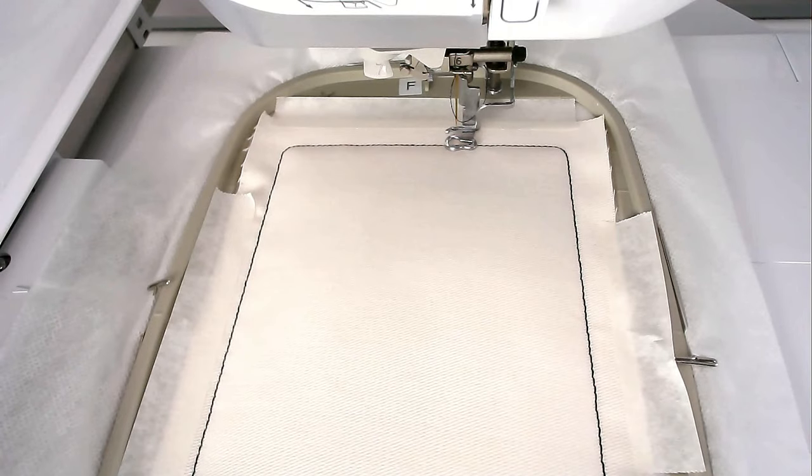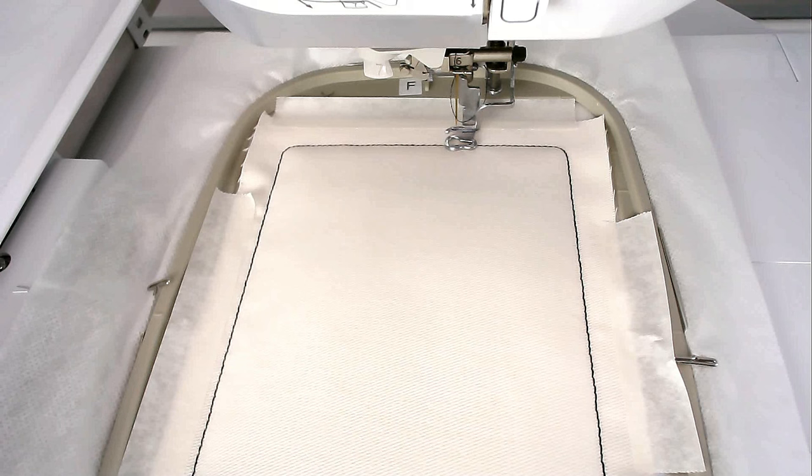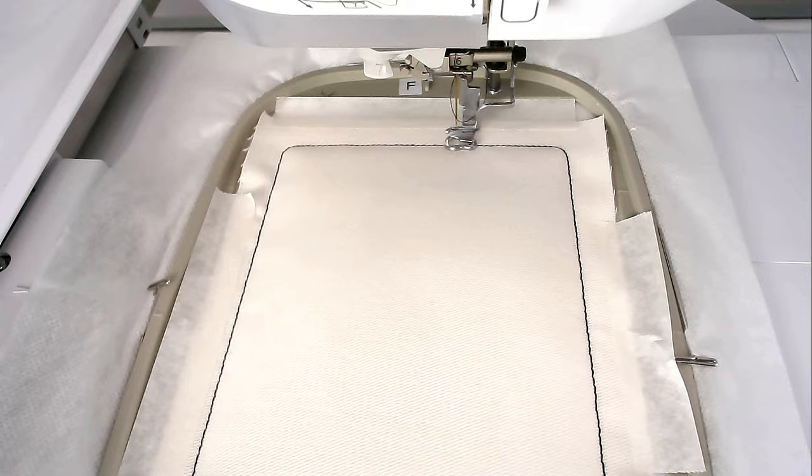We're now going to stitch the lines of the staff or stave depending on where you're from. So load your thread color for the lines into your machine and then stitch round number four. I'm going with black.